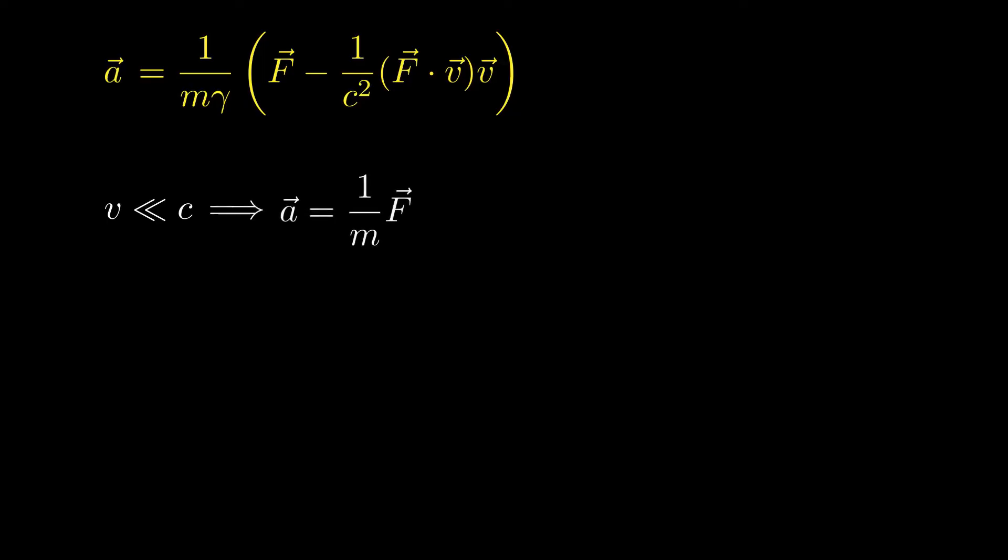Note that in the limit that the ion speed V is much less than the speed of light C, this result reduces to the non-relativistic version of Newton's second law, namely acceleration equals force over mass. In the non-relativistic case, the acceleration is proportional to the force. But in the relativistic case, this is no longer true. The acceleration is not simply proportional to the force.